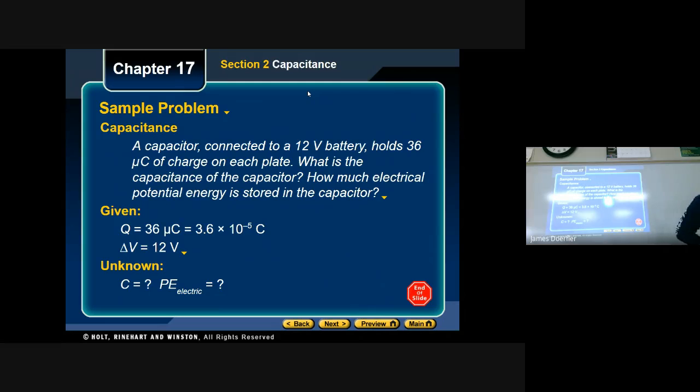Let's look at a problem. We have a capacitor connected to a 12 volt battery, oops, it holds 36 micro coulombs of charge on each plate. What is the capacitance of the capacitor and how much electrical potential energy is stored in the capacitor? Let's see how I'm trying to, there we go. So what do we know? Well we know the charge on each plate is 36 micro coulombs but we want to get it out of the micro for our calculating purposes and so we're going to use a little bit of dimensional analysis, you know unit conversion, to make it equal to 3.6 times 10 to the negative fifth coulombs.